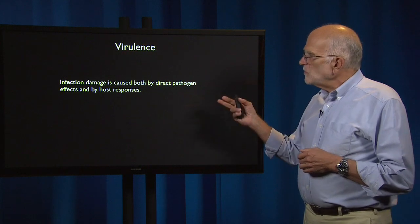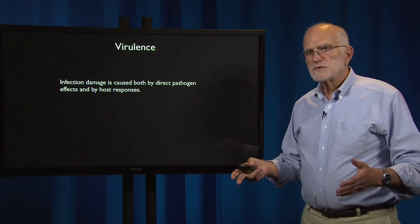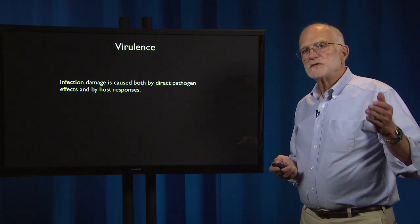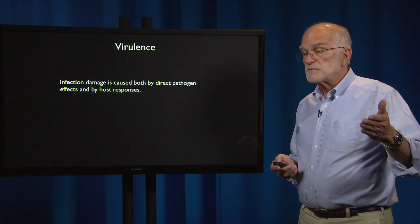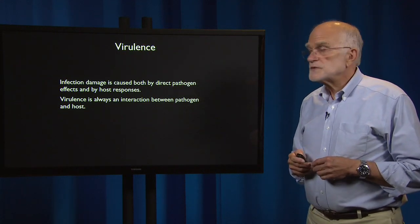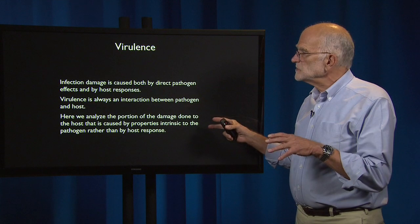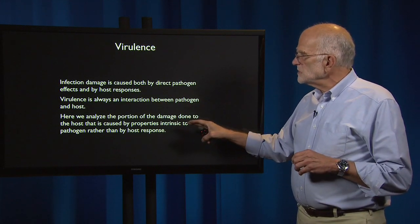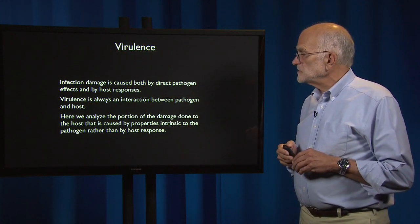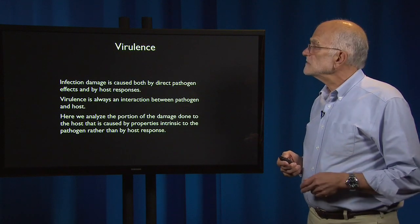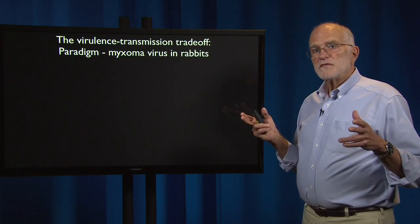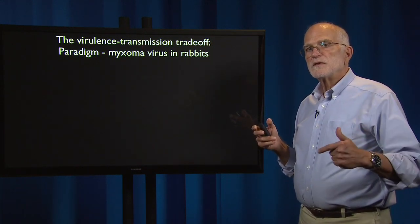Virulence is caused both by direct pathogen effects and by host responses. We've seen how many diseases are associated with the immune response. Virulence is always an interaction between pathogen and host. In these lectures, we are analyzing the portion of damage done to the host that is caused by properties intrinsic to the pathogen rather than by the host response. The first idea is that there is a trade-off between the virulence of the pathogen and the probability that it will be transmitted.